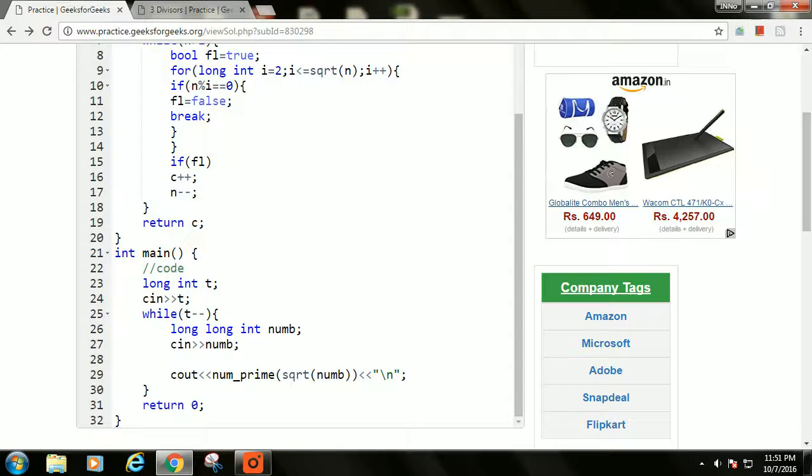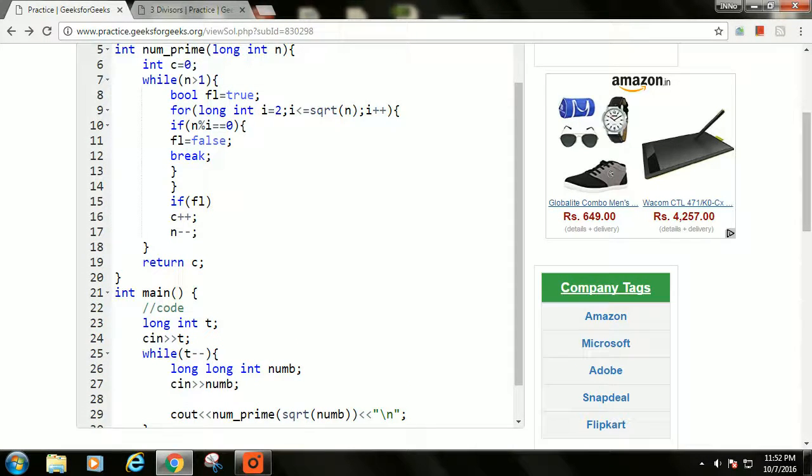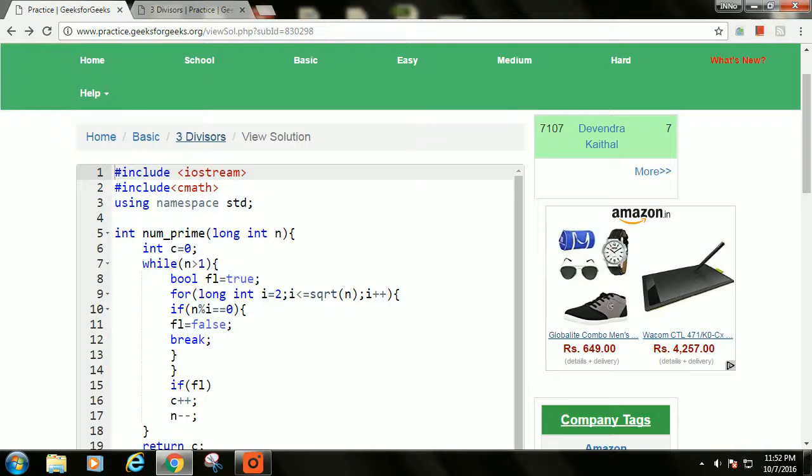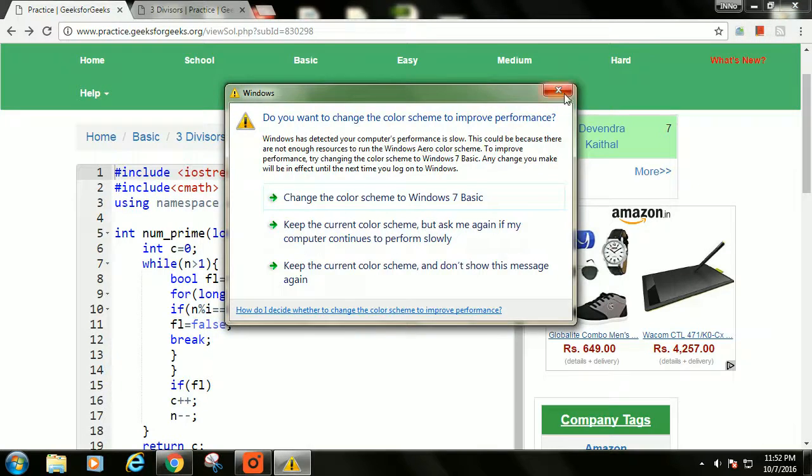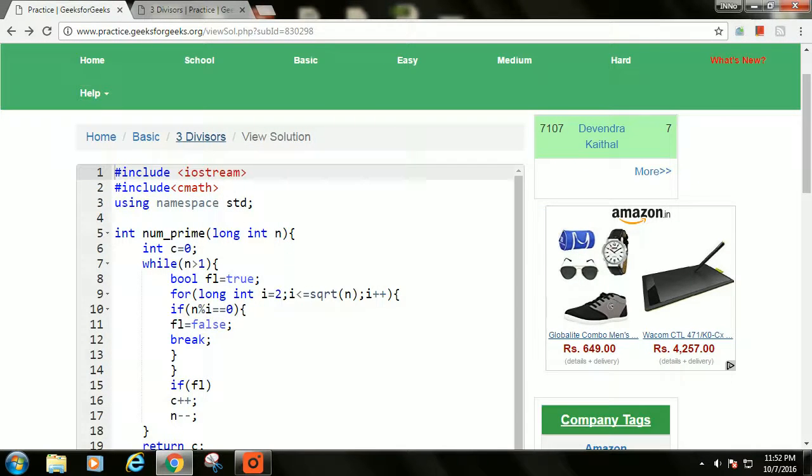We want to find numbers that are squares of a prime. We want to find the number of numbers that are less than num and are squares of primes. If we are able to find the number of primes that are less than or equal to the square root of num, then our job is done. Those numbers will actually be the numbers whose squares will have exactly 3 divisors.